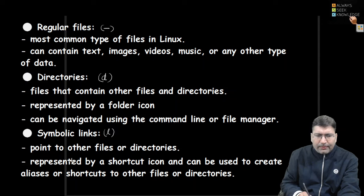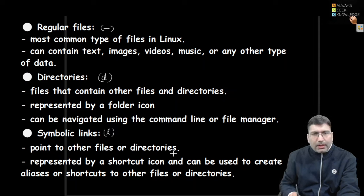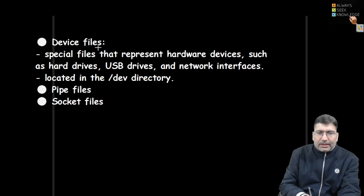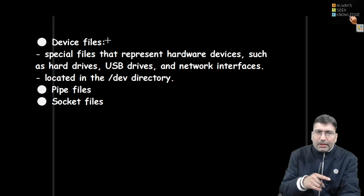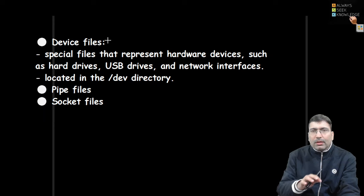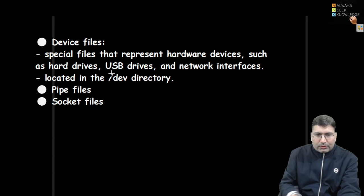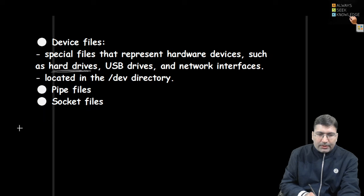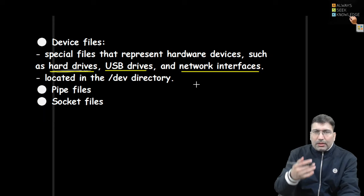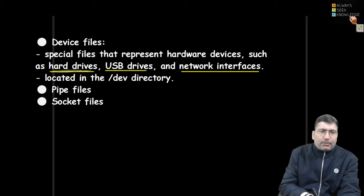Symbolic links have 'l' as the very first character. They point to other files or directories, represented by a shortcut icon, and can be used to create an alias or shortcut to another file. Device files have two types: character devices like keyboard or typewriter, and block devices like the laser printer. Other block devices include hard disk drives — if a hard disk handles data block by block it is a block device. USB and network interfaces are also there. Linux and Unix recognize every device as a file in two categories only: character or block.